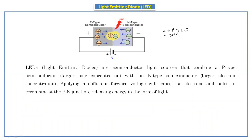In p-type the majority carriers are holes, and in n-type the majority carriers are electrons. These holes and electrons combine together — they recombine at the PN junction — releasing energy in the form of light. That is the main principle of the light emitting diode. Positive charge carriers from the p-type and negative charge carriers from the n-type recombine together at the junction and this releases some energy in the form of light.